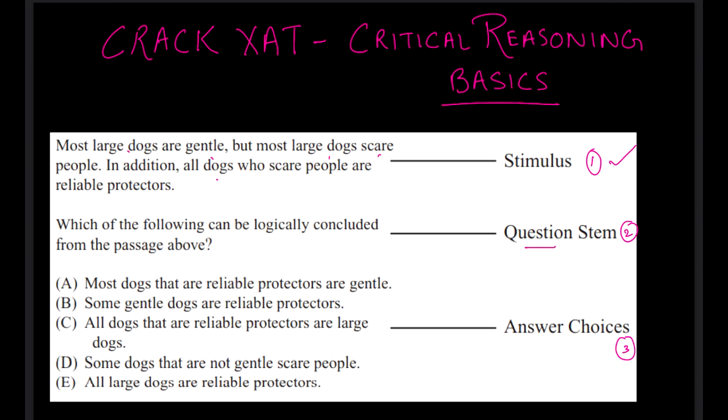That means all the important statements, like large dog's relation with gentle, large dog's relation with scaring people, and all dogs' relation with scaring people and reliable protectors. All this information is given, that's your stimulus and that's the heart of this question. Remember, heart of this question. Then comes your question stem, what you logically conclude, and this is just a format.